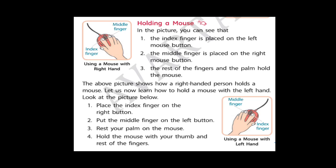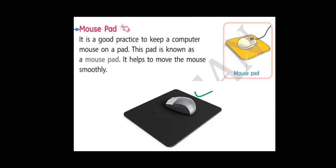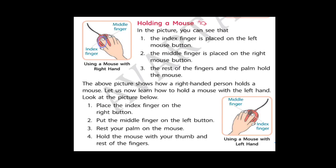Now let's learn about how to hold a mouse. There is a particular way to hold a mouse. See here the index finger which I have circled. This is your index finger. You have to place the index finger on the left mouse button. See here is the middle finger, which we have to place on the right mouse button. The rest of the fingers and our palm we use for holding the mouse. This is how we hold the mouse.